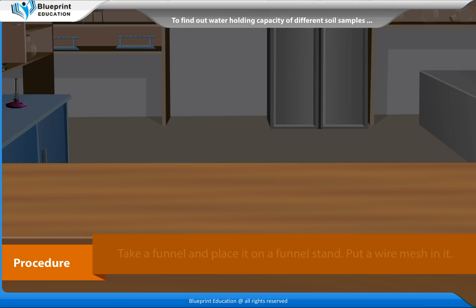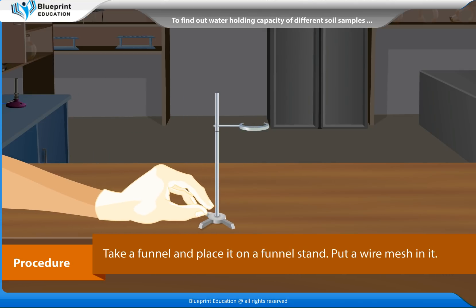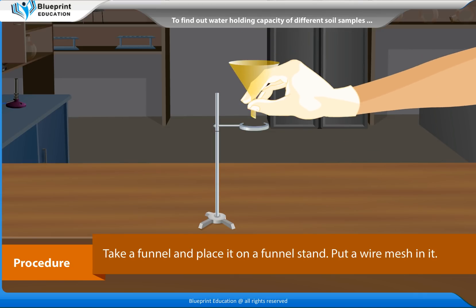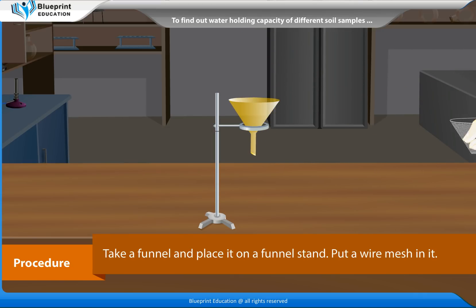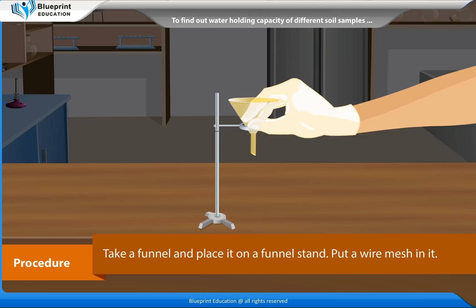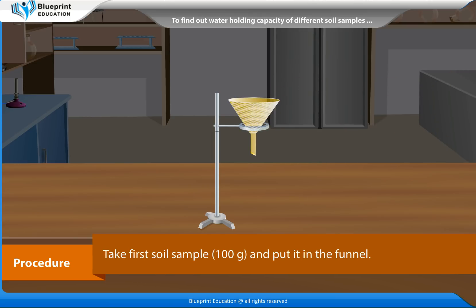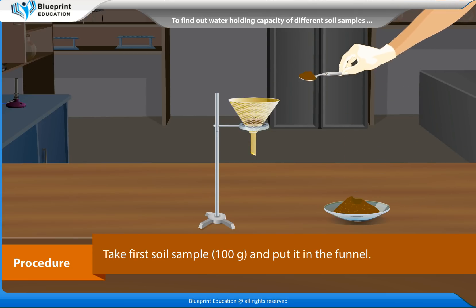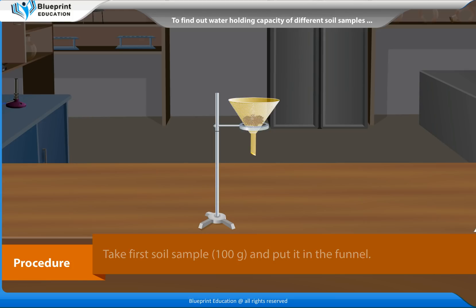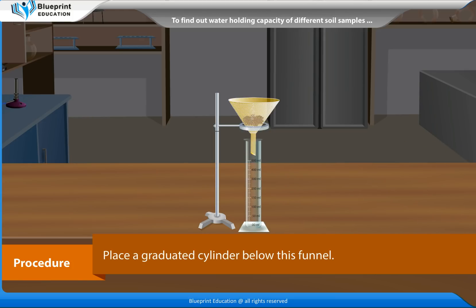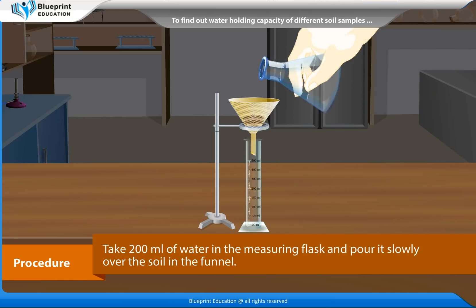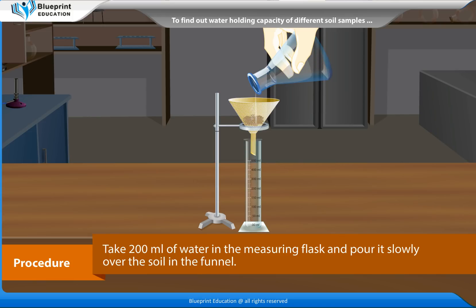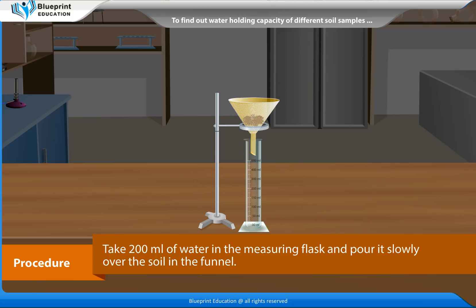Procedure: Take a funnel and place it on a funnel stand. Put a wire mesh in it. Take the first soil sample, 100 grams, and put it in the funnel. Place a graduated cylinder below this funnel. Take 200 ml of water in the measuring flask and pour it slowly over the soil in the funnel.